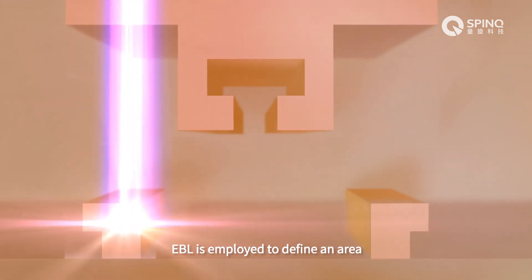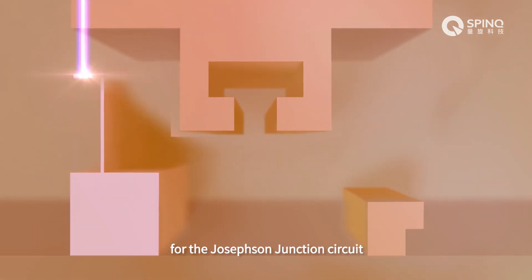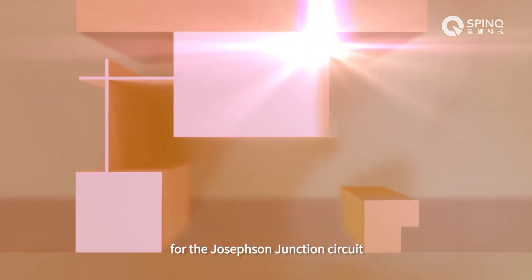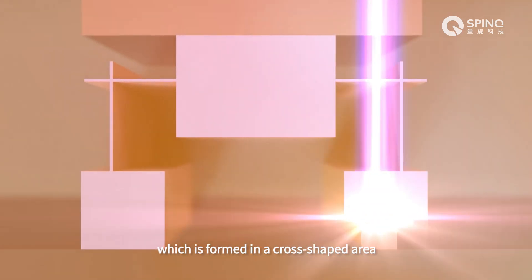EBL is employed to define an area for the Josephson junction circuit, which is formed in a cross-shaped area.